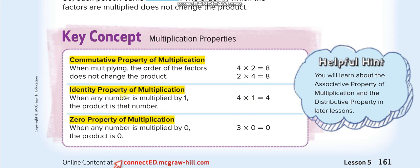The last multiplication property is the zero property of multiplication: any number times 0 is equal to 0. For example, 3 times 0 equals 0, and 100 times 0 also equals 0.